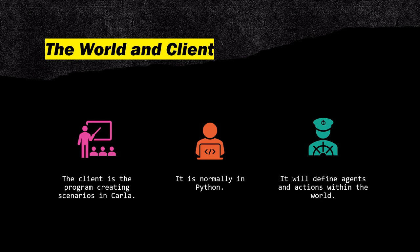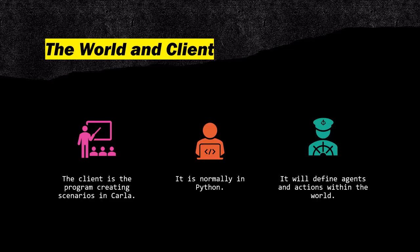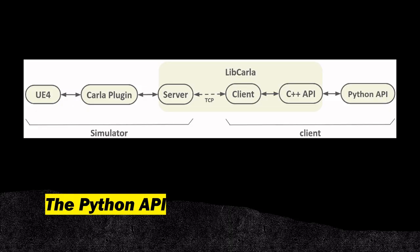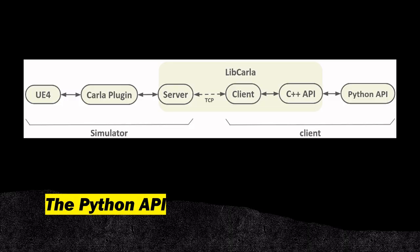Carla is programmed in Python, so everything that you want to run is going to be a Python script, which makes things easier. You will be defining the actions of the agents in this world. You have the whole API of Carla here, and you can see how it's structured and how the architecture works. Basically, Carla is created in Unreal 4. You have different plugins that define what the server is, and then you will have clients connected to the server. The clients have a C/C++ API, but on top of that you will be creating Python programs.